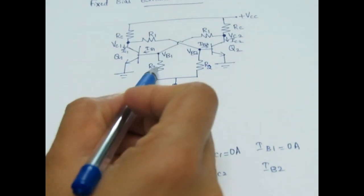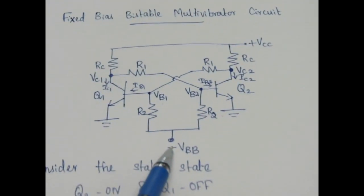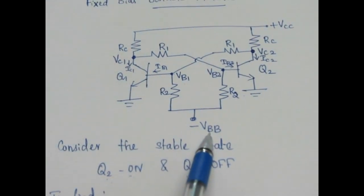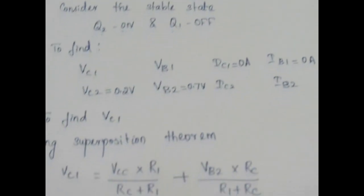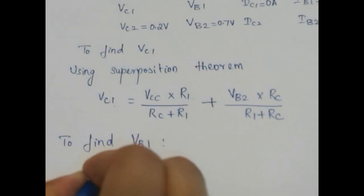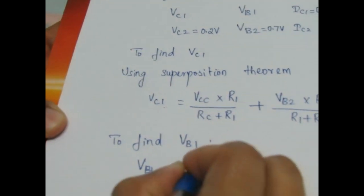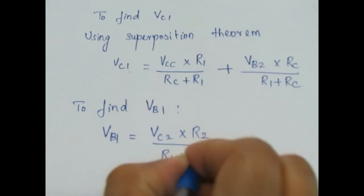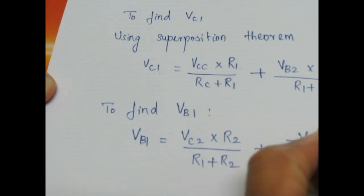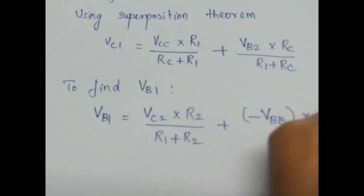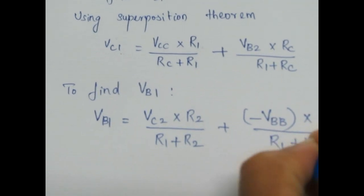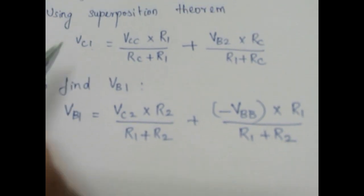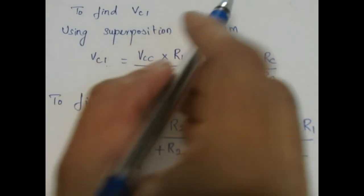To find VB1: through resistor R2 it is connected to minus VBB, and through R1 it is connected to VC2. We know VC2 and minus VBB, so again applying the superposition principle: VB1 equals VC2 times R2 divided by (R1 + R2), plus minus VBB times R1 divided by (R1 + R2). By applying superposition we can easily find VC1 and VB1.